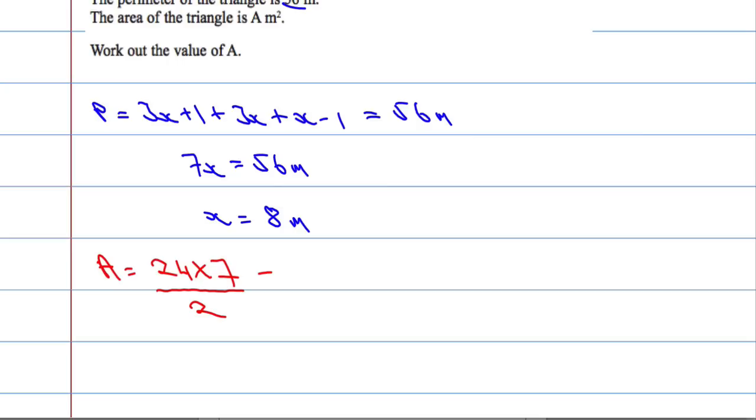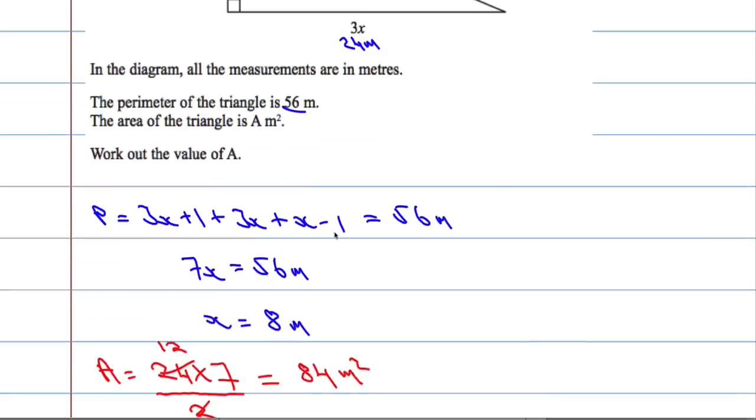Okay. When we work that out, the quickest way to do it for me would be 2 into 24. 2 goes into 24, 12 times, and 12 times 7 is 84. So, 84 metres squared. And that's your answer.